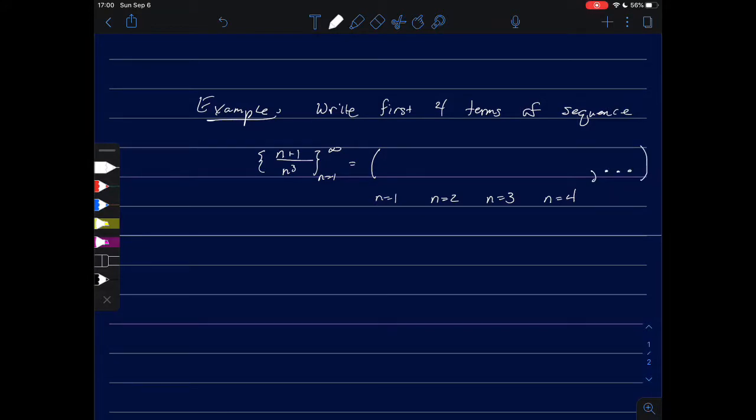We'll put in some ellipses to show it keeps going. When n equals 1, we have 1 plus 1, which is 2, over 1 cubed, which is 1. For n equals 2, we have 2 plus 1 over 2 cubed, 3 plus 1 over 3 cubed, 4 plus 1 over 4 cubed, and so on.